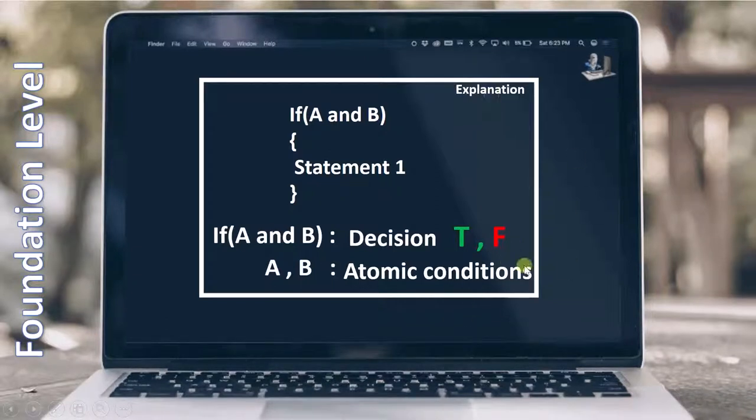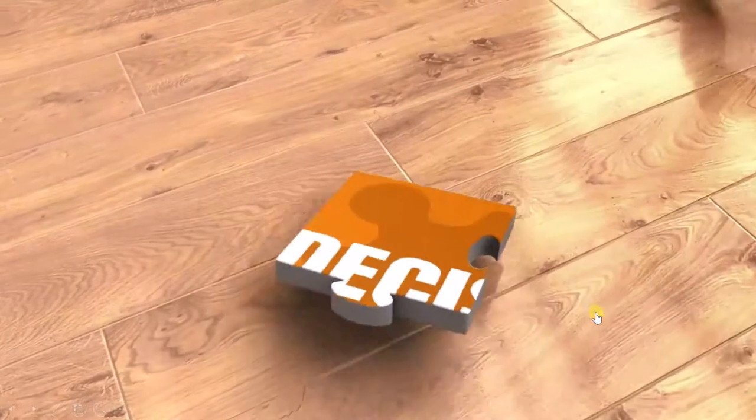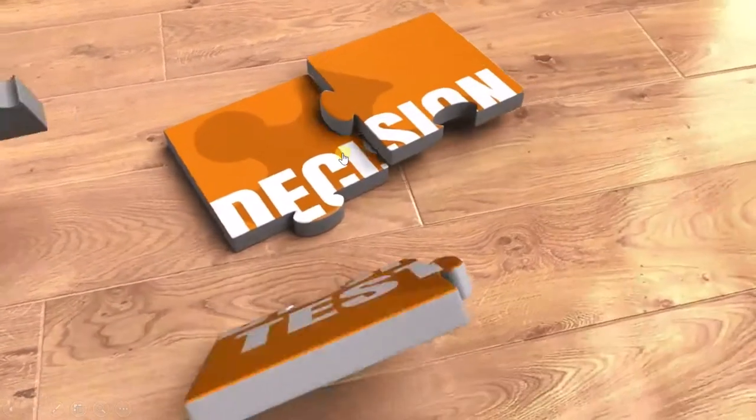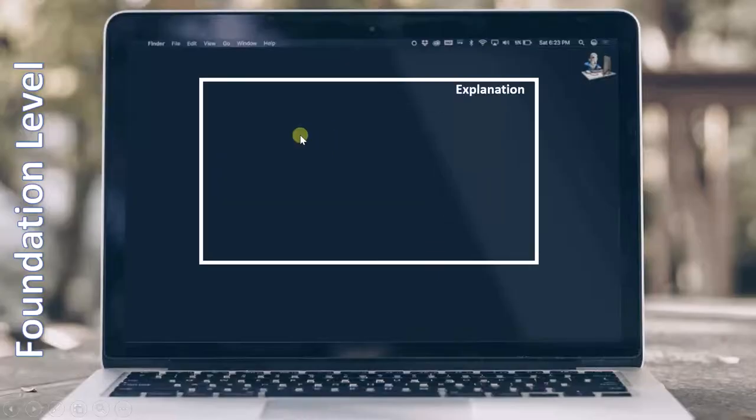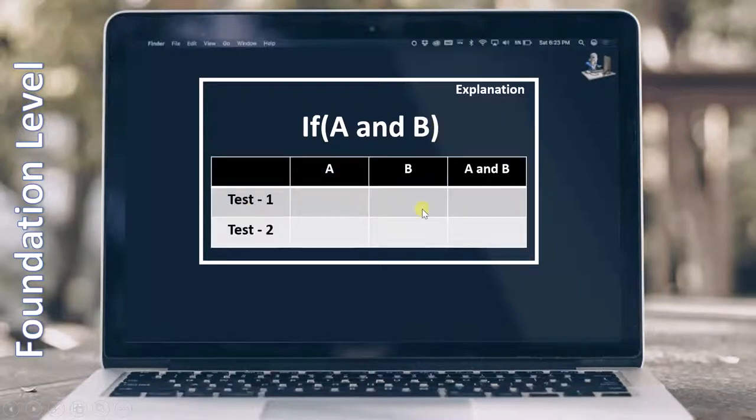In order to understand it better, now let's see what is the meaning of decision testing. Going with the same example, if A and B, we will have the same table here where A and B are the conditions and if A and B is a decision. So as I told you, now our focus is on the decision.